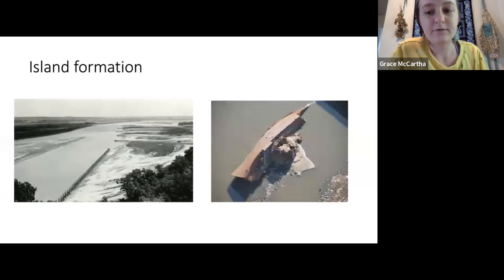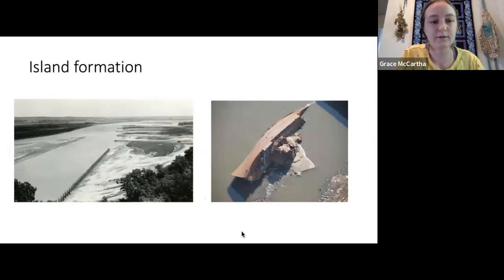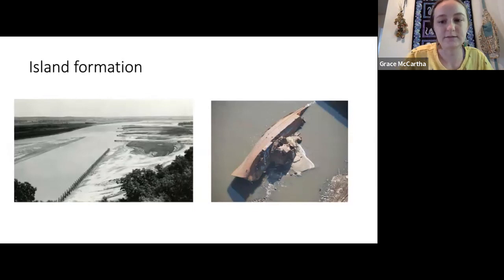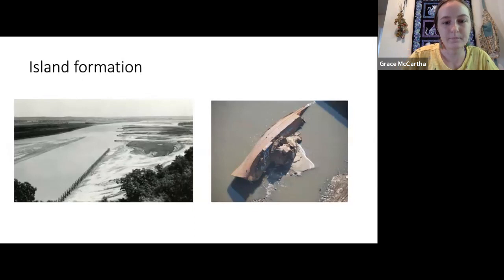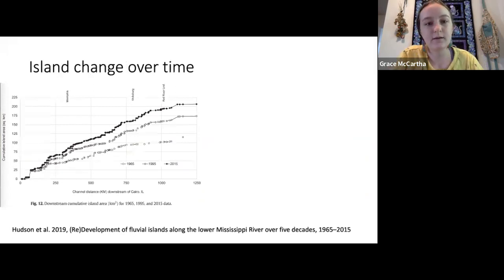This picture on the left shows really well how sediment can build up behind wing dykes — we can see an island with some vegetation starting to form. Three of our study islands were formed around or with the help of wing dykes, and our other three study islands formed from sediment building up behind steamboat wrecks. This picture on the right shows a sunken boat on the bottom of the river at low water level, with sediment starting to build up behind it.